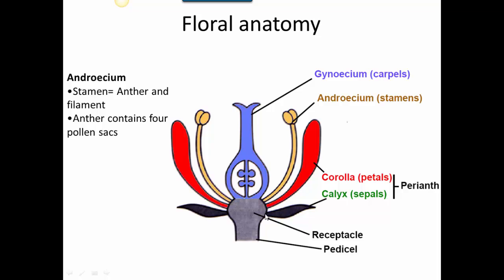The sterile whorls include the sepals, which are structures inserted at the bottom of the flower that often protect it when in bud. Sometimes they can be highly attractive, like in poinsettia, where the big red structures most people think of as petals are actually sepals. The calyx is the term for the entire whorl, while sepal describes the individual parts. The next sterile whorl is the corolla, made up of the petals, whose role is often to attract animal pollinators.